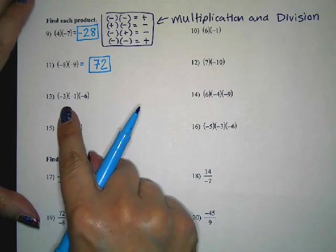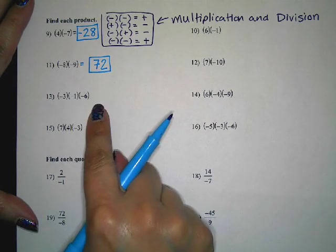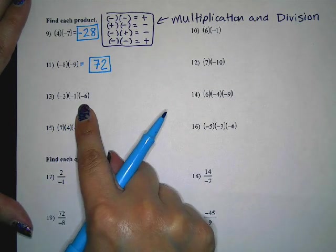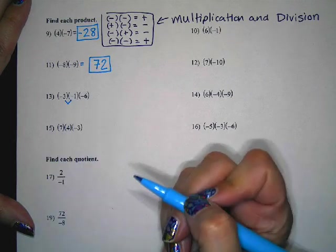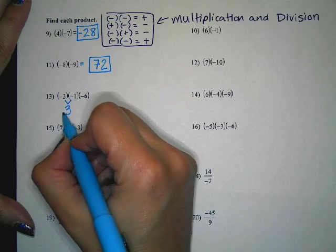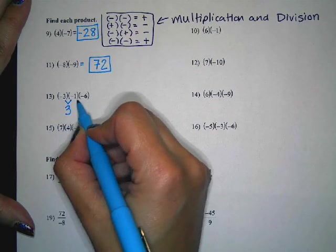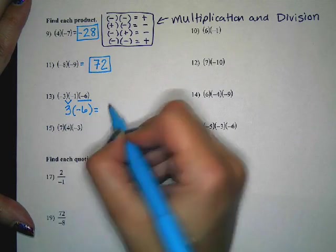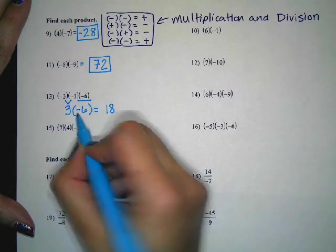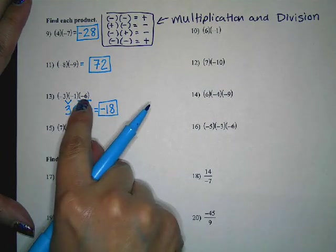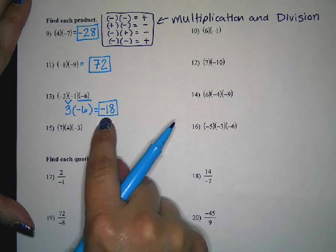When you have three numbers multiplying, multiply them as you go. If you have an odd number of negatives, your answer is negative; if you have an even number, they all have a pair and it's positive. Starting with negative three times negative one: three times one is three, and negative times negative is positive, so positive three. Then times negative six: three times six is 18, and I have one negative, so it's negative 18. Double-checking — I had three negatives to start, which is an odd number, so the answer had to be negative.